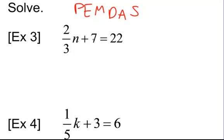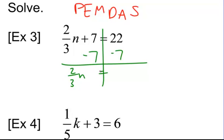But since we're undoing the equation, we're actually going to go in reverse order. So let's start with addition and subtraction. Here, since it's plus 7, to isolate the variable, we need to subtract 7. So then we have 2 thirds times n equals 15.